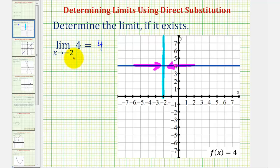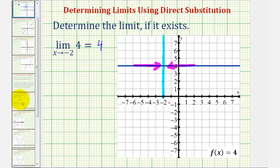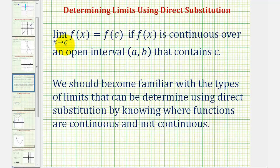This brings up an important point when determining limits: the limit as x approaches c of f of x equals f of c, meaning we can determine this limit by performing direct substitution with x equals c, if f of x is continuous over an open interval from a to b that contains c. If a function is continuous over all real numbers, we can always determine the limit by performing direct substitution.